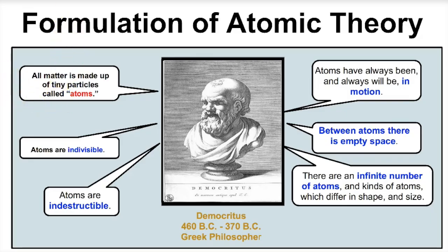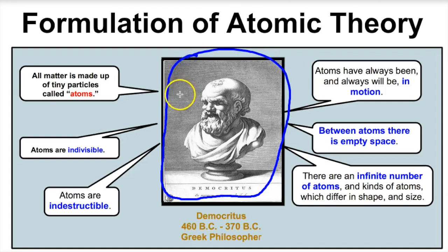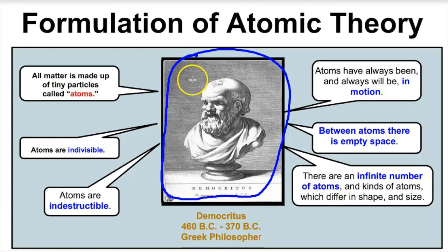It all starts 2,000 years ago with this Greek philosopher by the name of Democritus. Back then there wasn't Xbox, PlayStation, Twitter, or Instagram — so what did these Greek philosophers do? They thought about things. One day Democritus is thinking: what is all this stuff around me made up of? And he formulates the very first atomic theory.